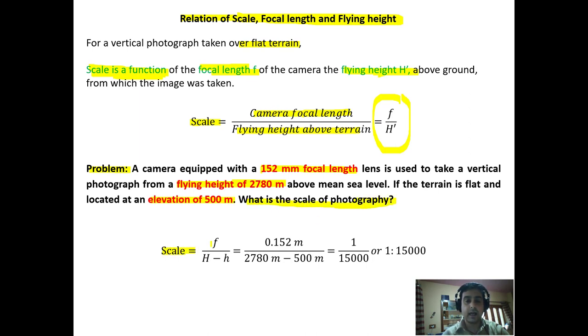The scale is equal to f upon h dash, we know, but here the terrain is flat and located at an elevation of 500 meters. So this 500 meters has to be subtracted from the total flying height.